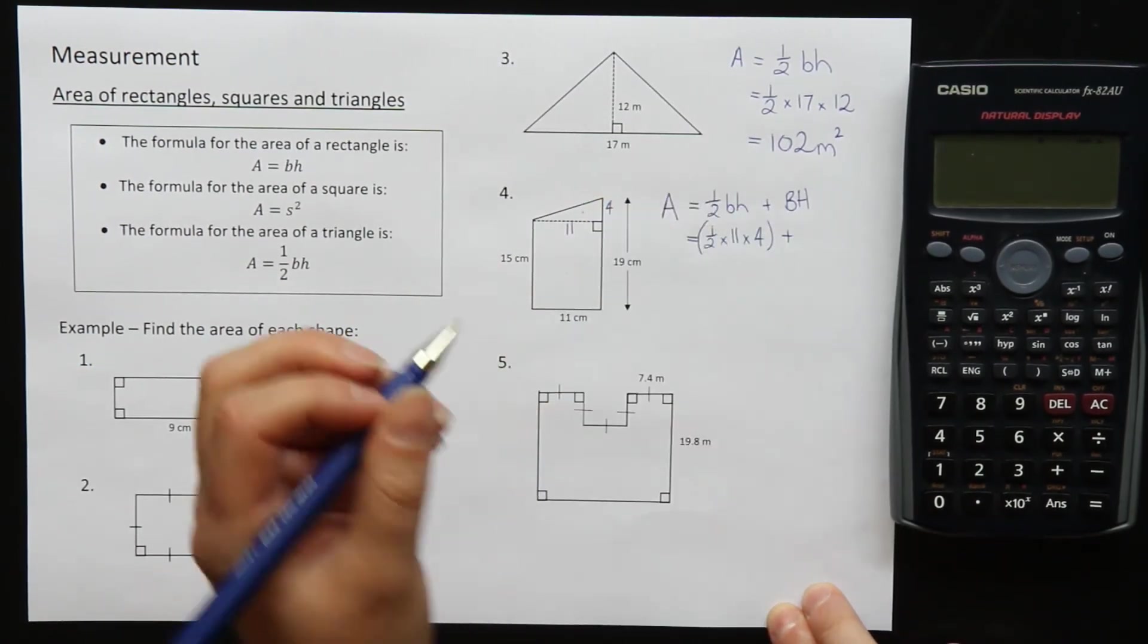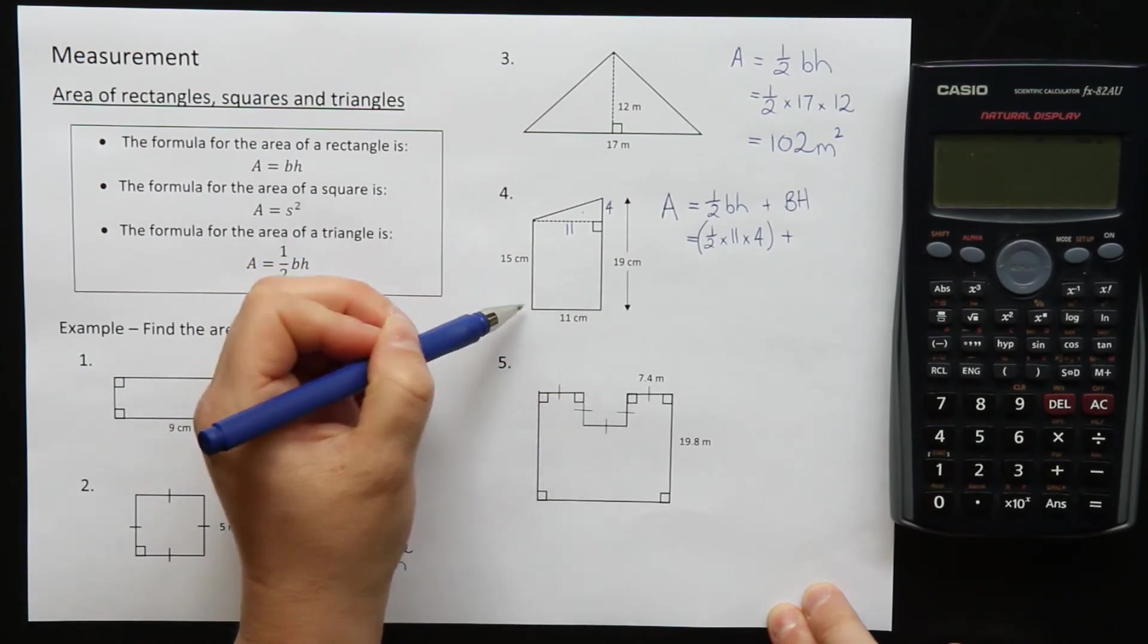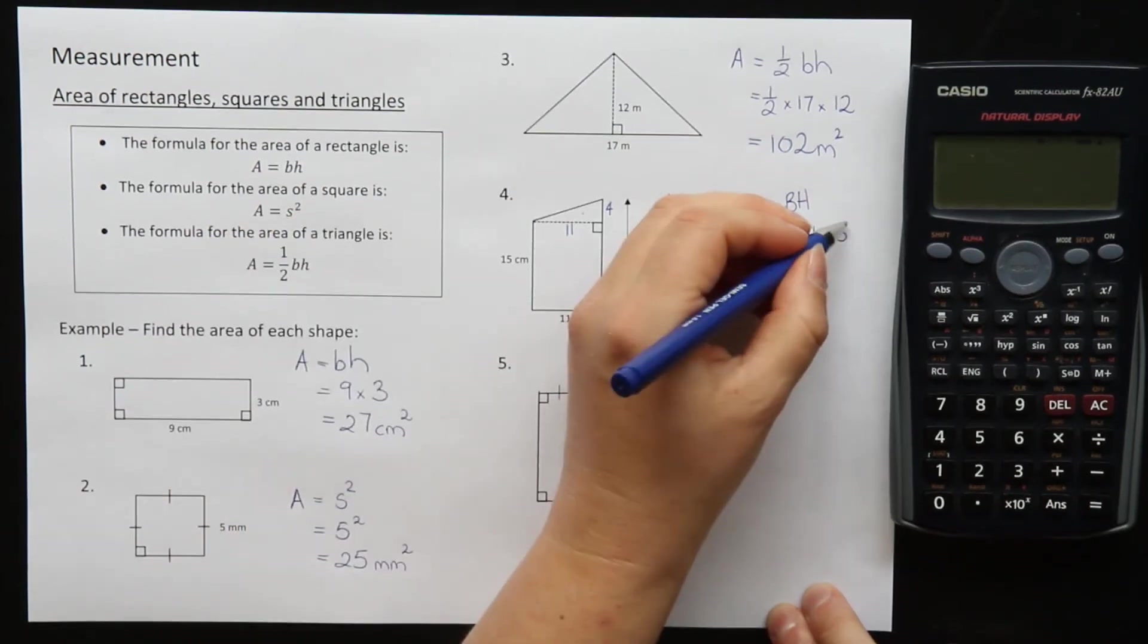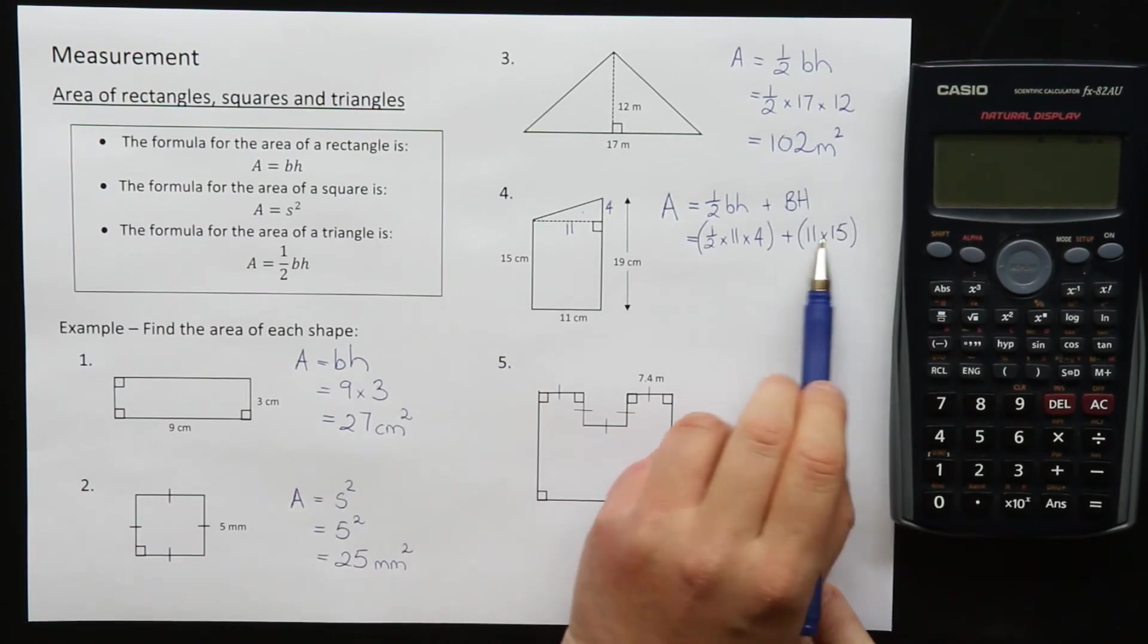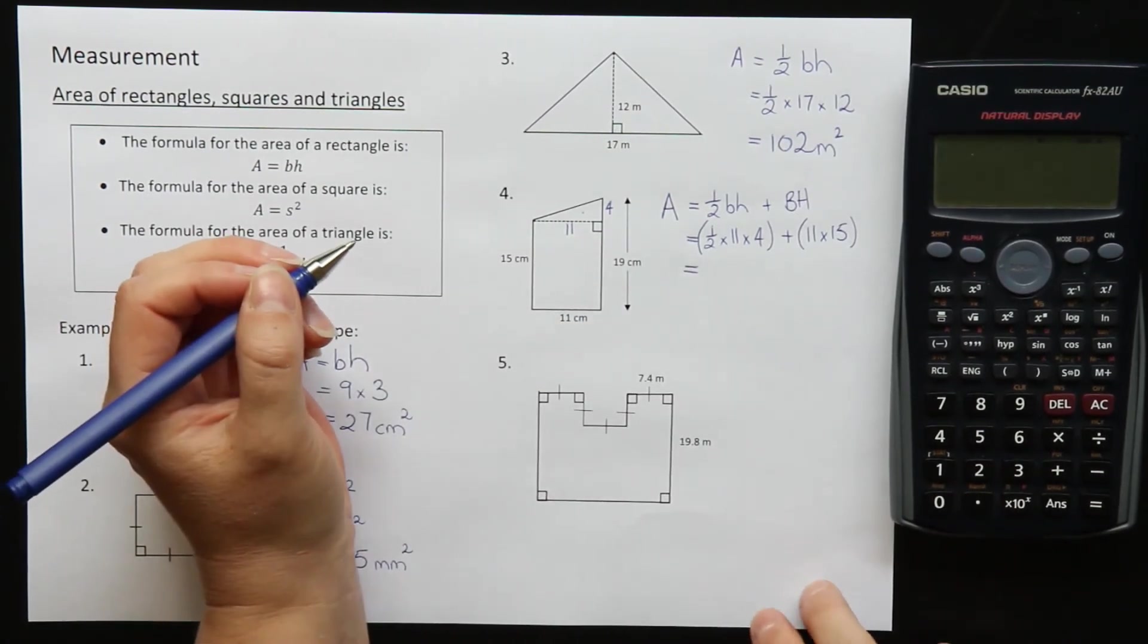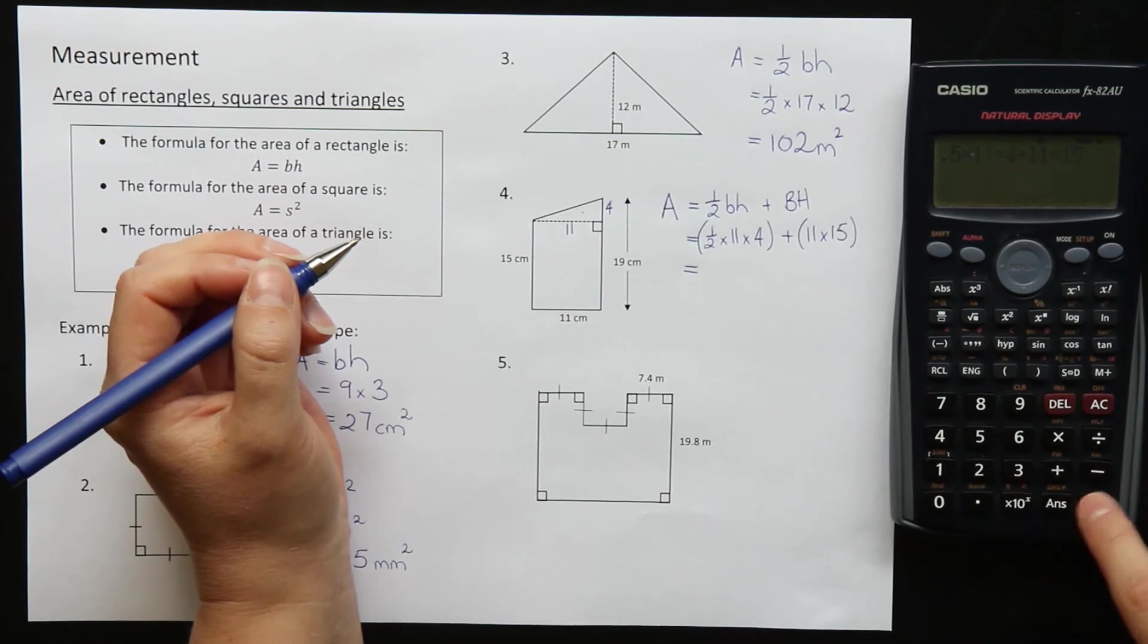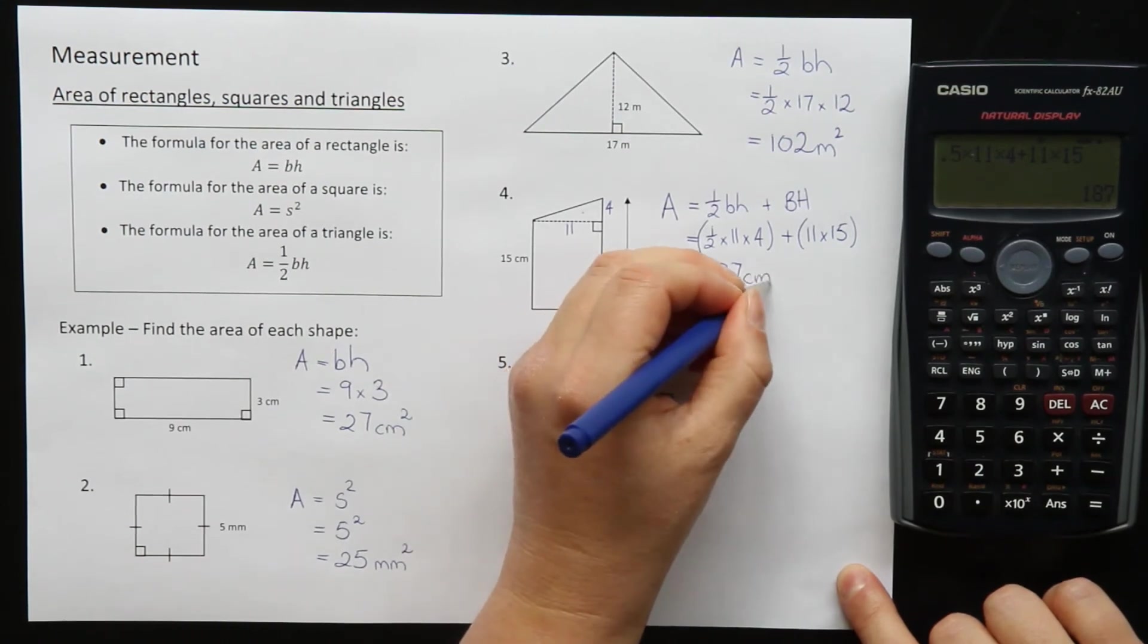Now I'm going to add on the area of my rectangle. My rectangle has a base and a height of 11 and 15, so 11 times 15 and I can close, put some brackets around that so that I've got here is my triangle, here is my rectangle that I'm adding together. So all I have to do now is type that into my calculator. So half times 11 times 4 plus 11 times 15 equals 187. The units are centimeters squared.